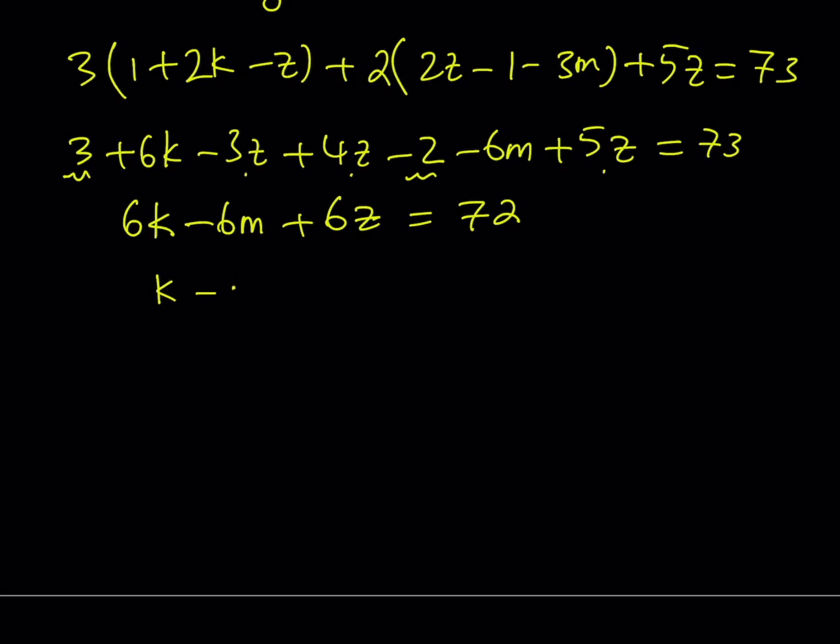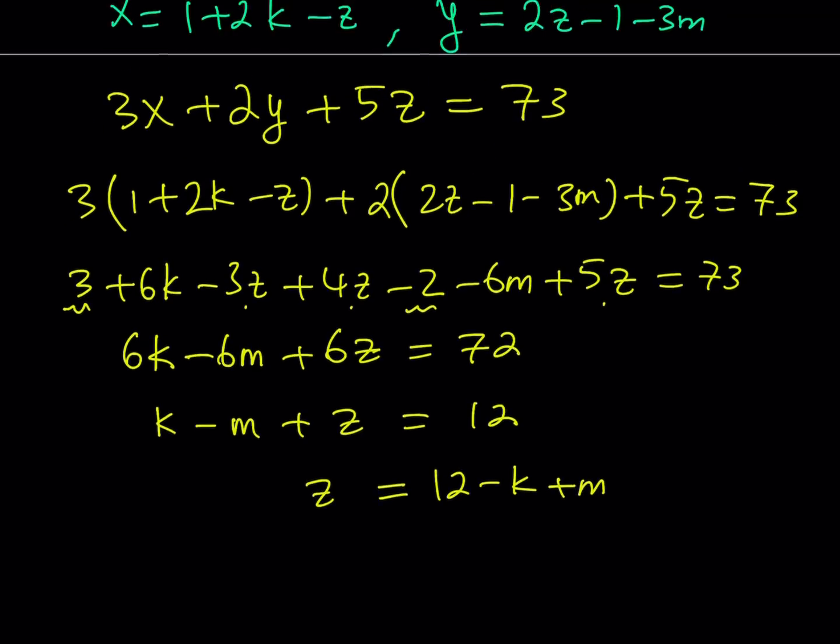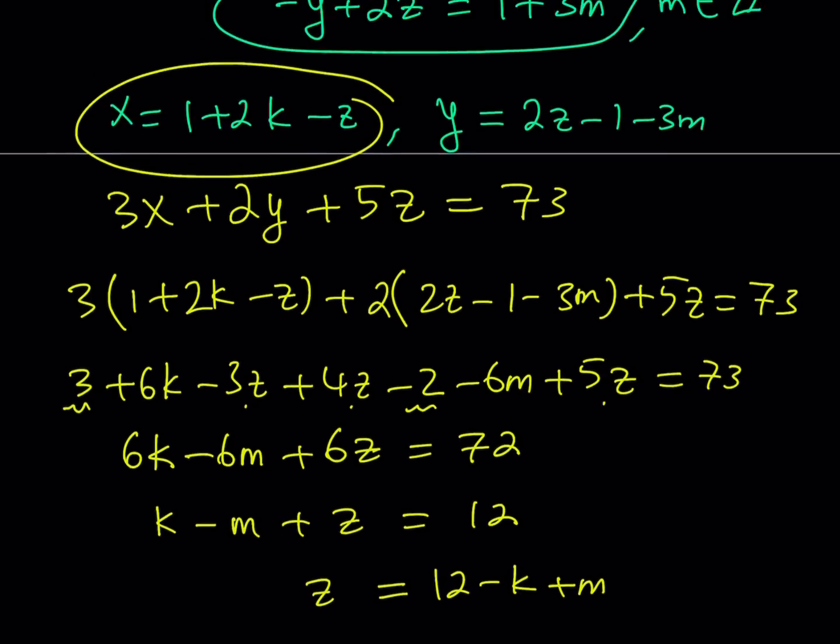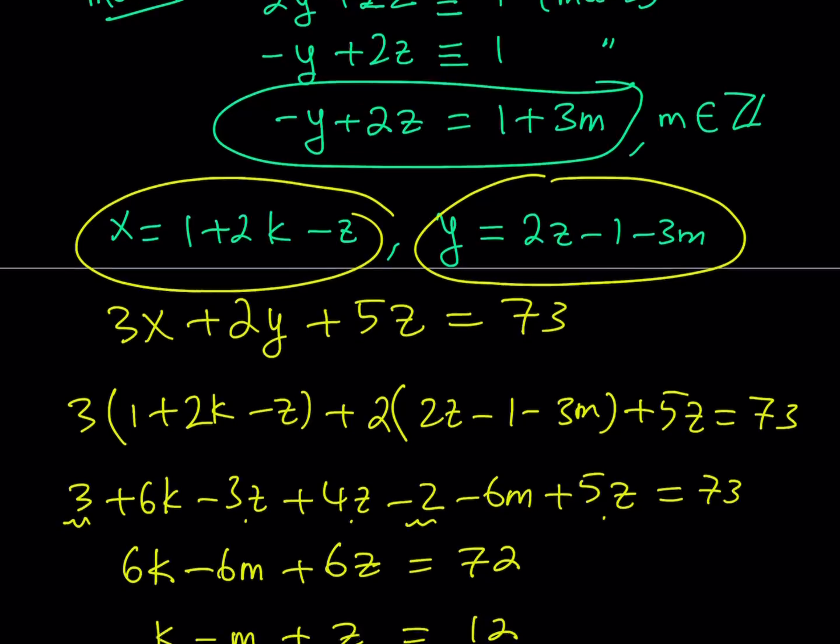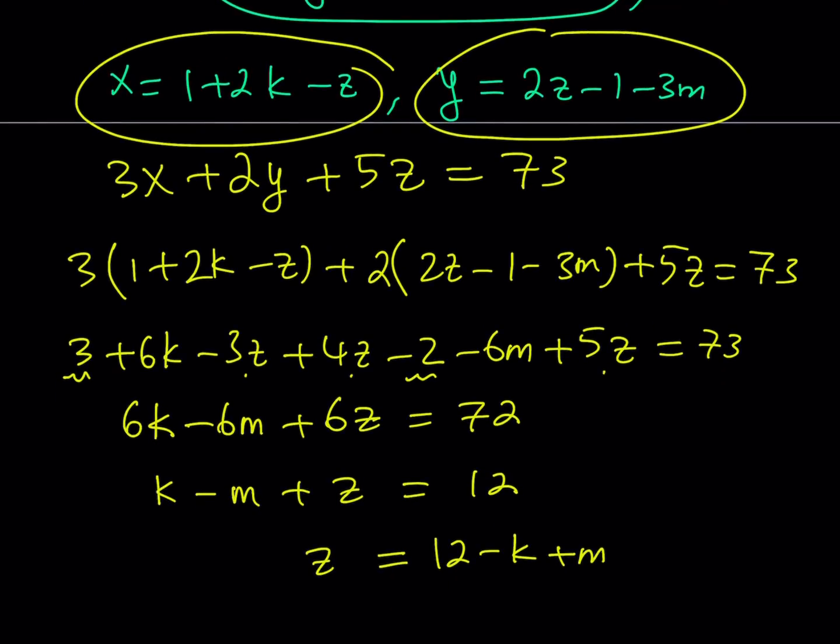Divide by 6, you get something nicer, smaller numbers. From here, I can basically isolate z. So I can write z as 12 minus k plus m. This allows me to express z in terms of k and m.